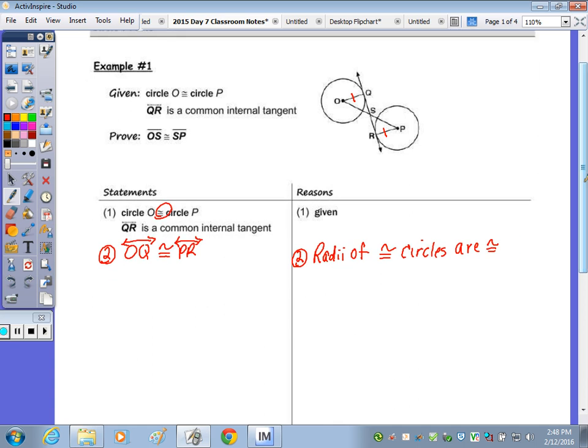Number three. So we used that statement, let's look at this statement. QR is a common internal tangent, and tangents, what's the relationship between a tangent and a radius? They're perpendicular.